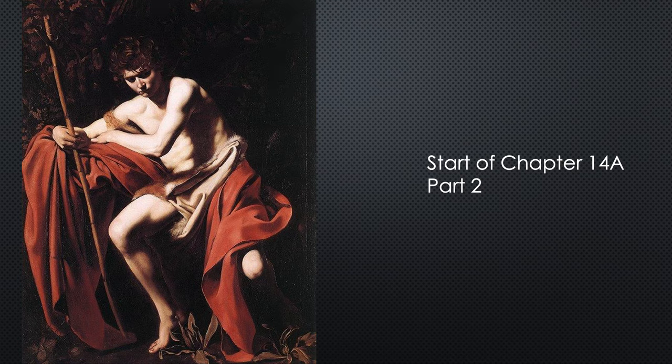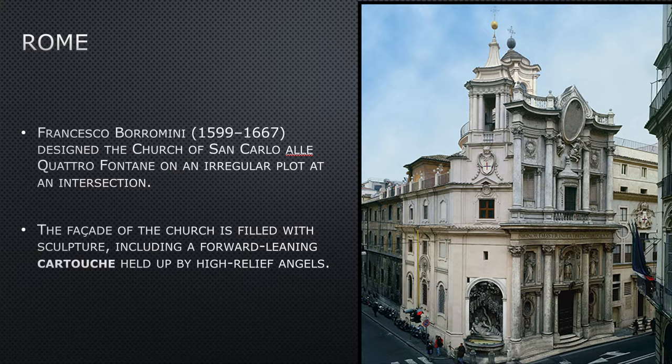Part 2 of Chapter 14, Section A. We're still in Italy, we're still in Rome, and I'm going to introduce you to your third person whose last name begins with B, an Italian name. There's so many of them. And this is Francesco Borromini, and he's an architect. Just as Bernini was extremely innovative in the way he envisioned his sculptures, so is Borromini in architecture.